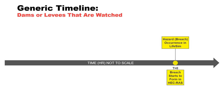Breach formation in HEC-RAS begins at time zero. Beyond this time, the breach is virtually certain to form because intervention is unsuccessful and the failure mode has progressed enough that flows begin to increase rapidly due to gross enlargement of a pipe or loss of crest followed by collapse, downcutting, and widening. Hazard or breach occurrence in LIFE-SIM also begins at time zero, and the likelihood of breach in the event tree corresponds to this time.